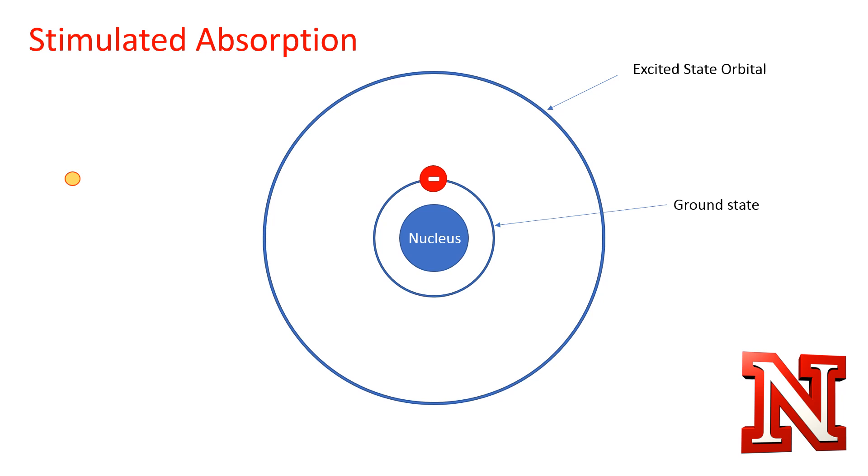To create a laser, you start with a positively charged nucleus and a negative electron. Electrons reside in orbitals. Most of the time, you will find electrons in their ground state, which is also called their lowest energy level.